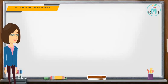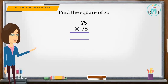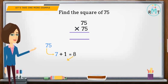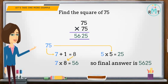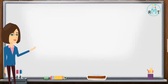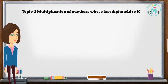Let's take one more example. Find the square of 75. Apart from 5, the number is 7. The number that comes after 7 is 8. We multiply 7 with 8 and write the answer 56. Next, we multiply the last digits 5 by 5 and put 25 beside it, so the final answer is 5625. Topic 2: multiplication of numbers whose last digits add to 10.